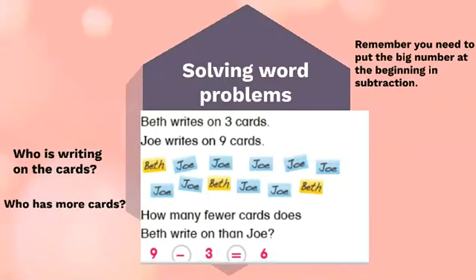Solving word problems. I'm sure now you know what the main things to look for in a word problem are. Beth writes on three cards, Joe writes on nine cards. Who is writing on the cards? Beth and Joe are writing on cards, but Beth only wrote on three cards. Joe wrote on nine cards. Who has more cards?